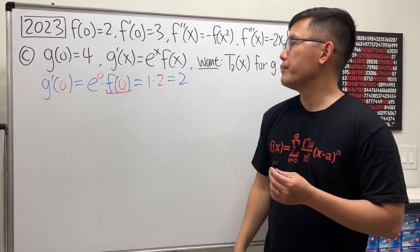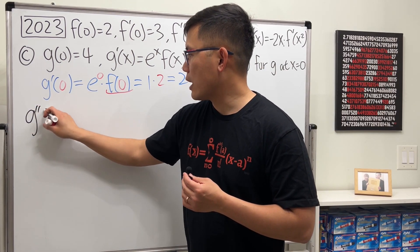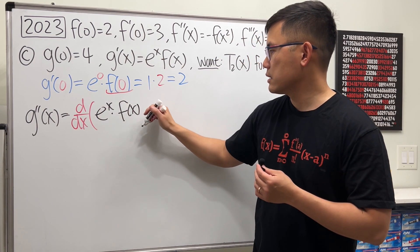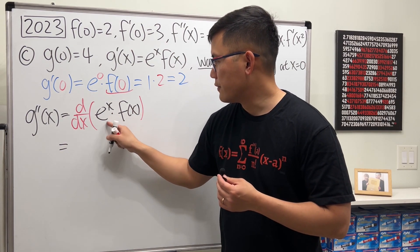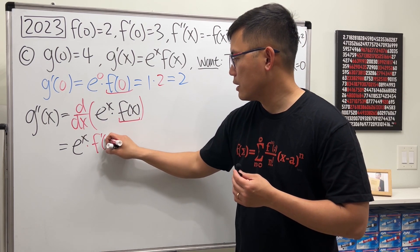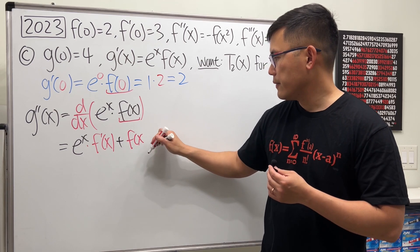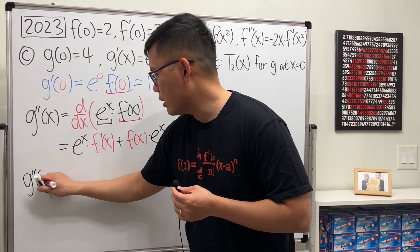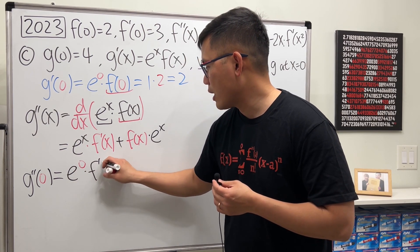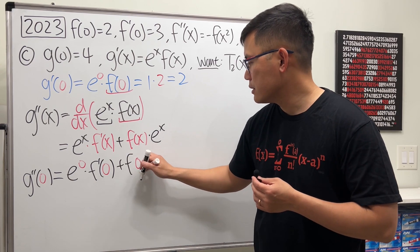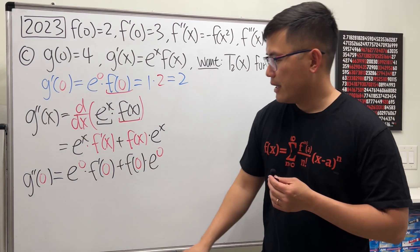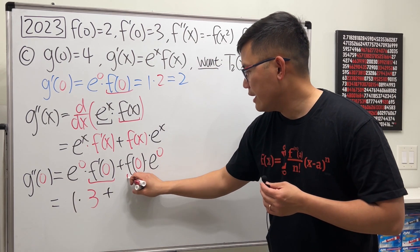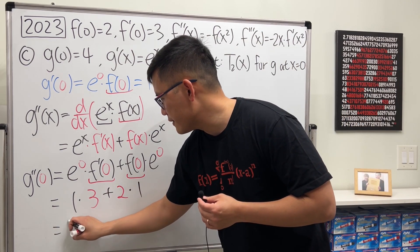Then we need the second derivative. Differentiating g prime of x, we get g double prime of x equal to the derivative of e to the x times f of x. Using the product rule: first function times the derivative of the second, plus the second function times the derivative of the first. Plugging in 0: g double prime of 0 equals e to the 0 times f prime of 0, plus f of 0 times e to the 0. That's 1 times 3, plus 2 times 1, which equals 5.